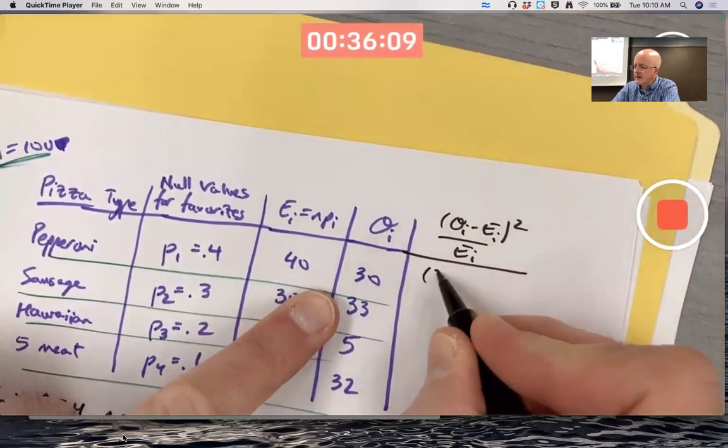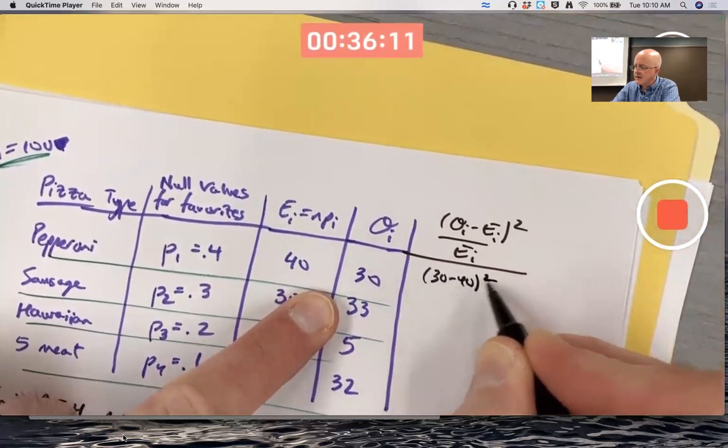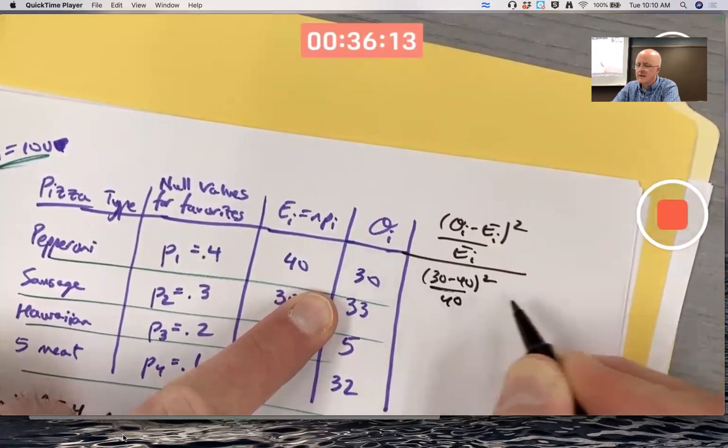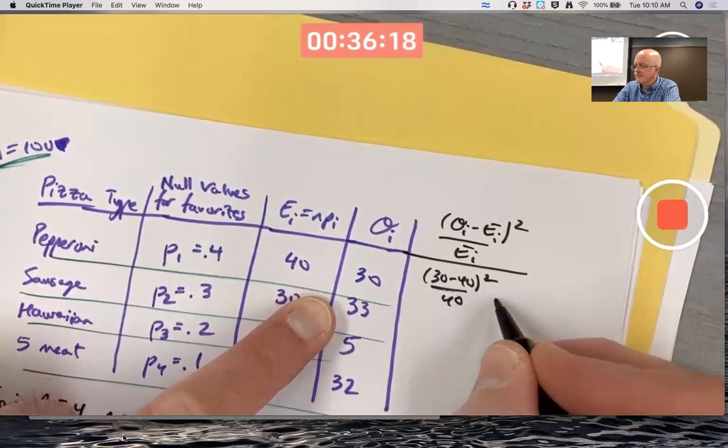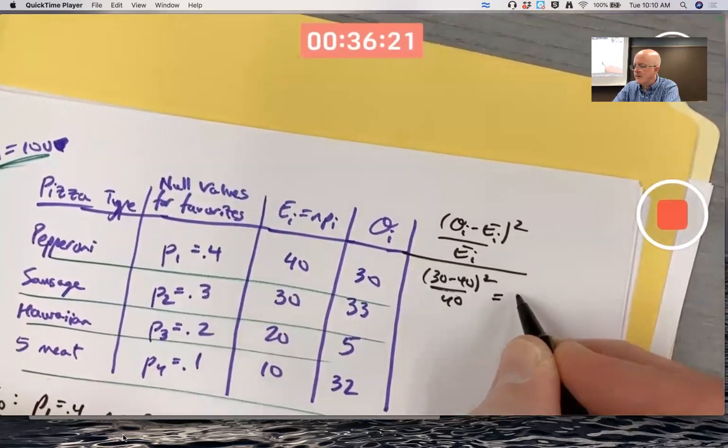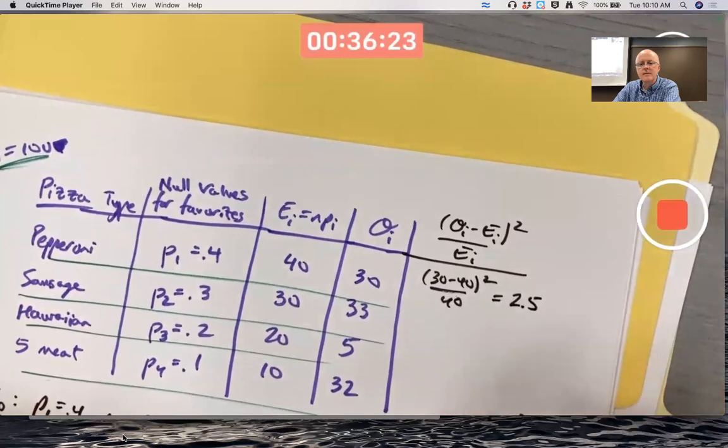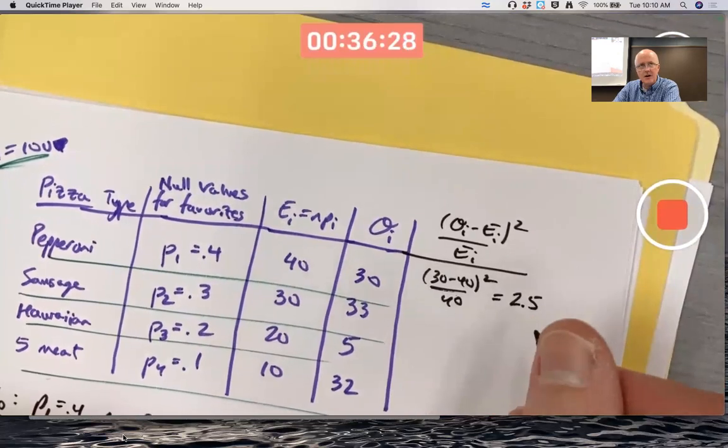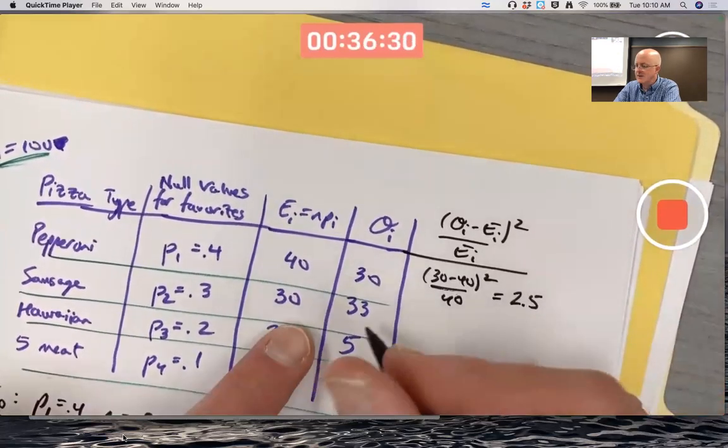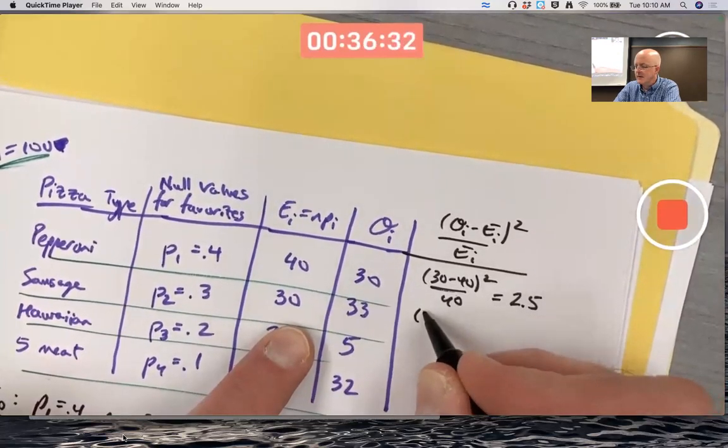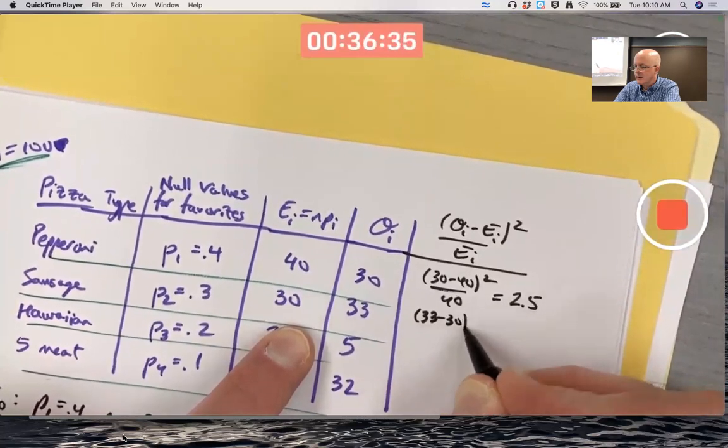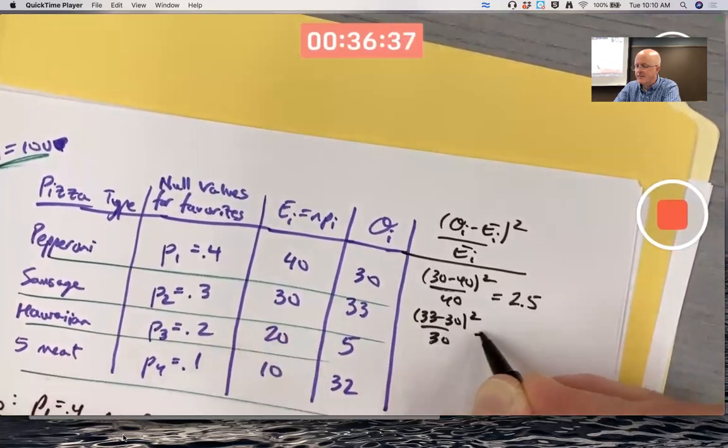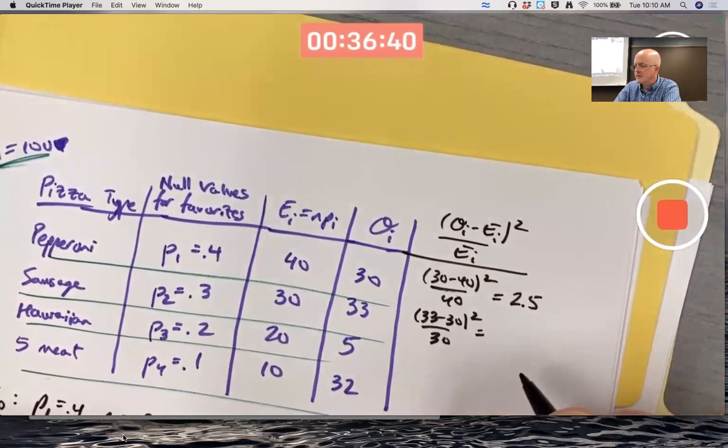So that'll be 100 over 40. That'll be 2.5, relatively extreme, relatively large value there. This next one's going to be smaller: 33 minus 30 squared over 30. That'll be 9 over 30, which is 3 tenths, 0.3.